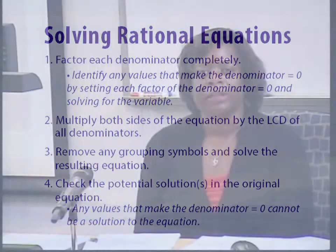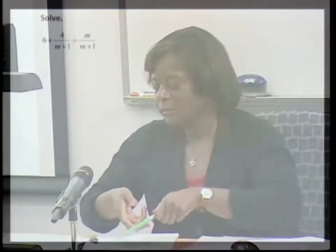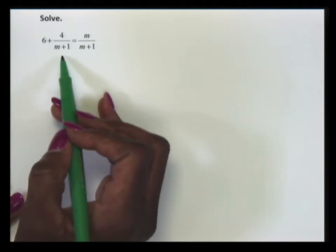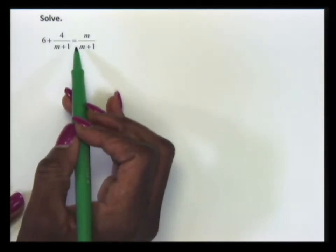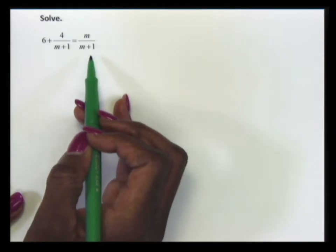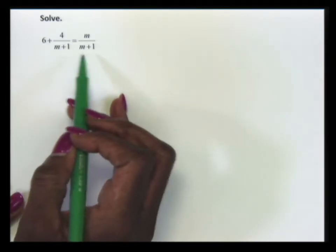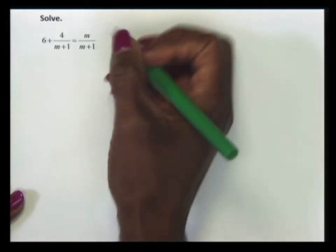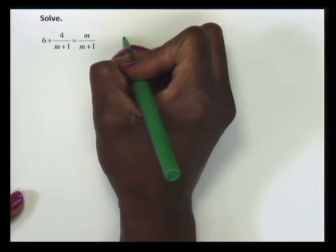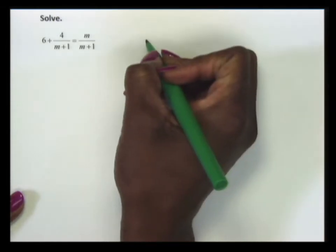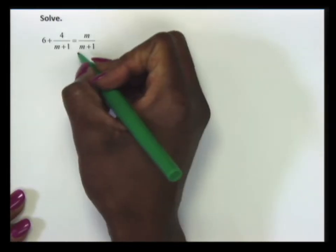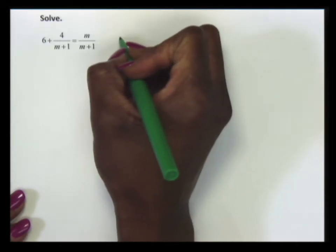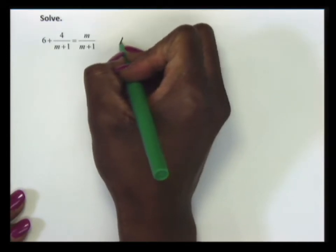Let's take a look at an example. In this example, we have 6 plus 4 over m plus 1 equals m over m plus 1. Here, our denominators do not need to be factored. So we'll just note that if m were equal to negative 1, negative 1 plus 1 would be 0. So our value cannot equal negative 1.